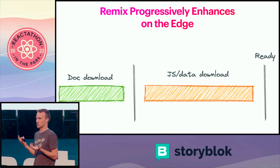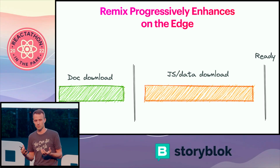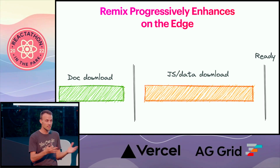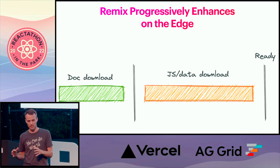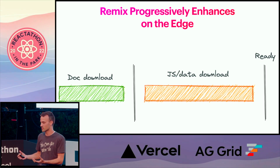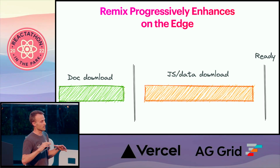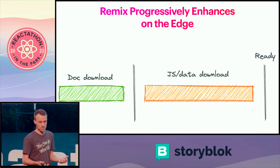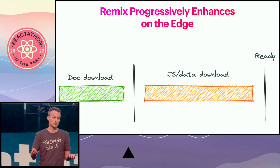The next thing is progressive enhancement. This is a really cool thing we have on the web — browsers actually know how to do links and mutations. You don't need a router or anything like that; they know how to do all of this stuff. If you can design a framework that emulates that sort of experience, then you can utilize progressive enhancement.